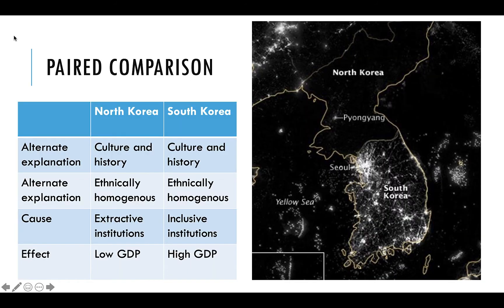Comparing two similar countries to each other is a great way to rule out alternate explanations for a theory. As Acemoglu and Robinson note in Why Nations Fail, the similar cultures of North and South Korea allow us to rule that out as an explanation for their levels of economic development. But we always have to ask how similar two countries really are.